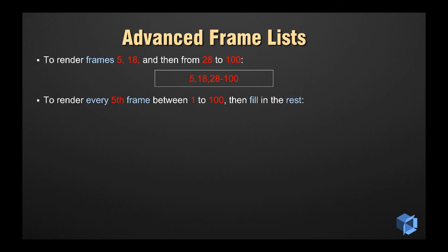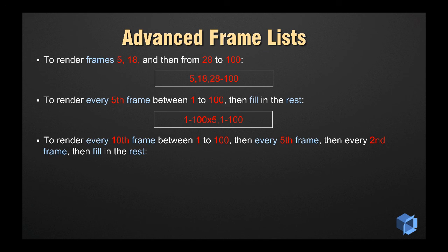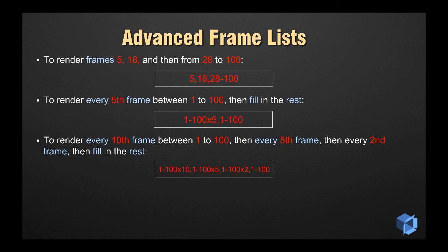To render every fifth frame and then fill in the rest of the frames afterwards, you would type 1-100x5, comma, 1-100. To render every tenth, then every fifth, then every second, and finally fill in the rest, you would type 1-100x10, comma, 1-100x5, comma, 1-100x2, comma, and then finally 1-100 for the fill-in frames.